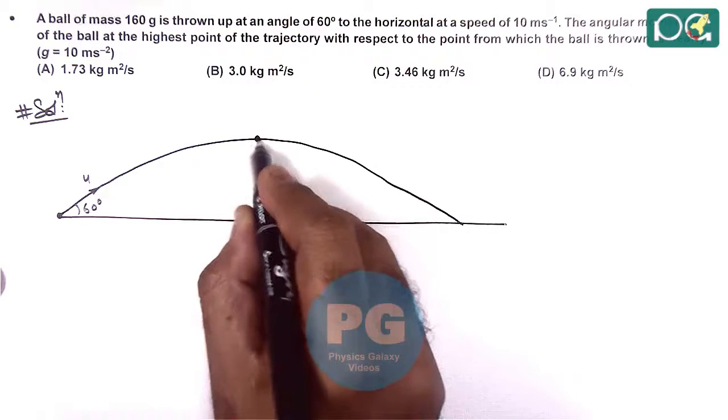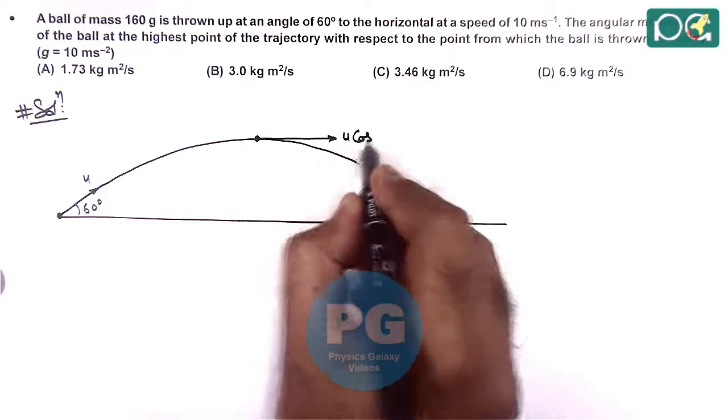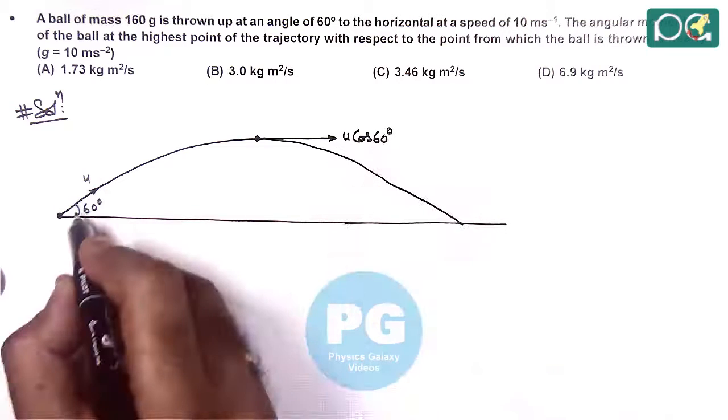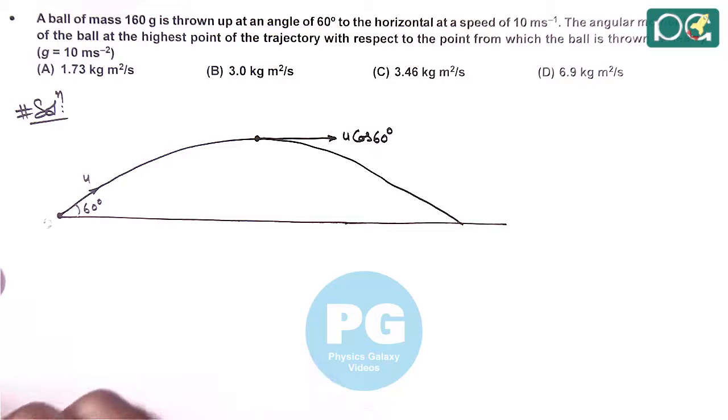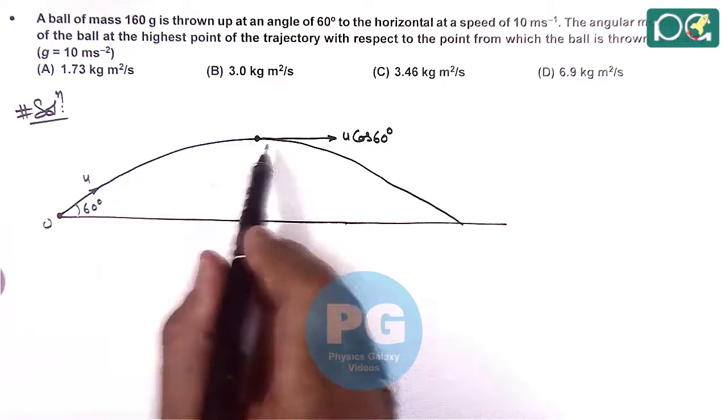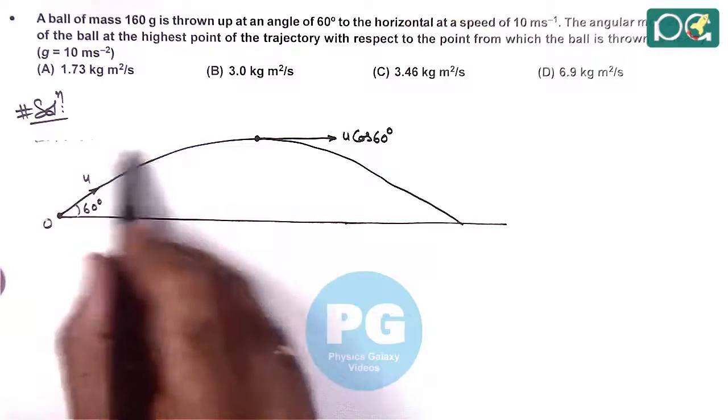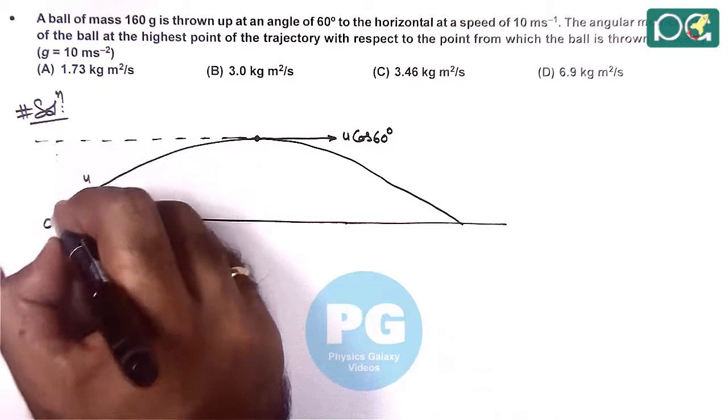Here at the topmost point we know the projectile velocity is u cos 60 degree as horizontal speed remains constant. And with respect to point O if we wish to calculate the angular momentum then it will be the linear momentum at this point multiplied with the perpendicular distance.